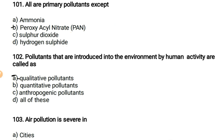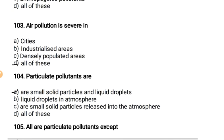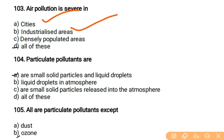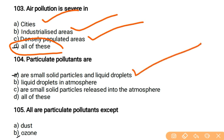Air pollution is severe in which area? Air pollution is severe in cities, industrialized areas, and densely populated areas — so all of the above are severely polluted regions. Particulate pollutants are small solid particles and liquid droplets.